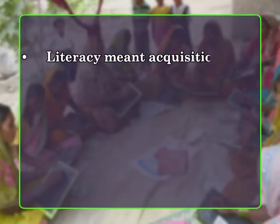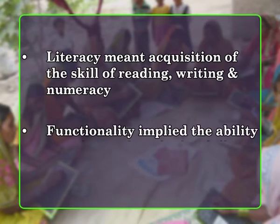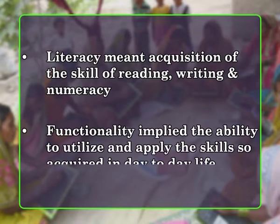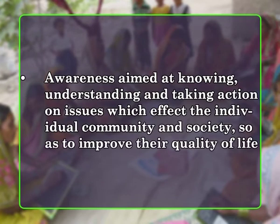The target for this program was to educate 100 million adults within a time frame of five years. The objectives of the National Adult Education Program were not merely to impart literacy in the conventional sense, but also to provide learners with functionality and awareness, conceived as three integral components. Literacy meant acquisition of skills of reading, writing, and numeracy. Functionality implied the ability to utilize and apply the skills acquired in day-to-day life. Awareness aimed at knowing, understanding, and taking action on issues affecting the individual, community, and society so as to improve their quality of life.